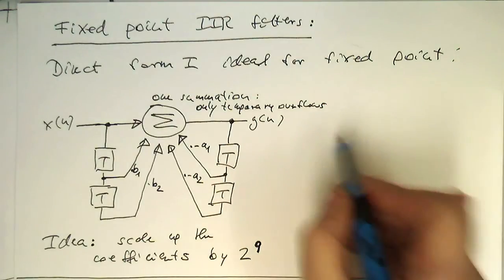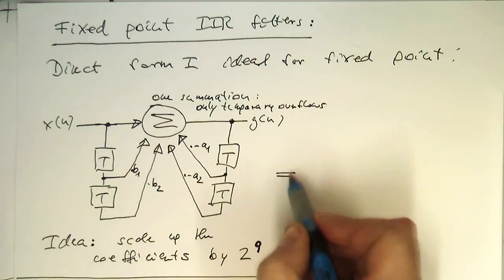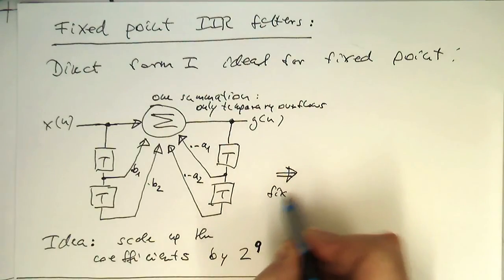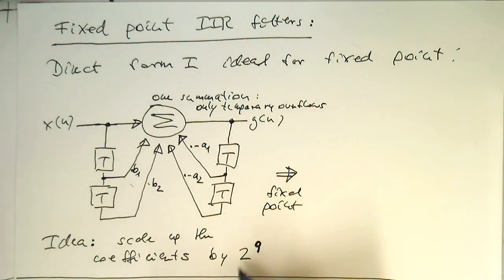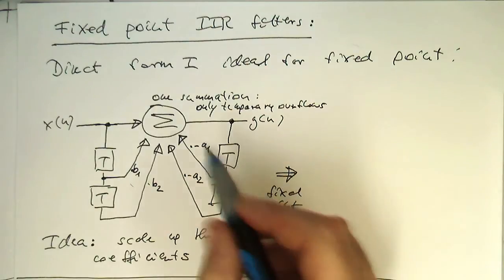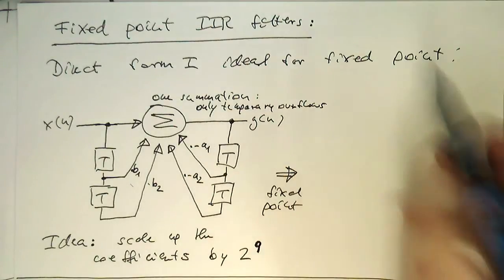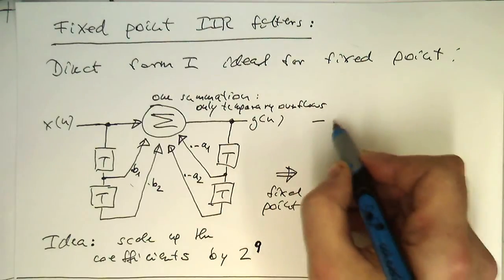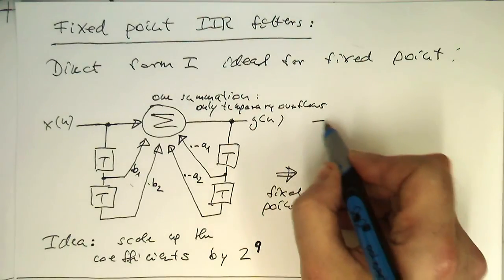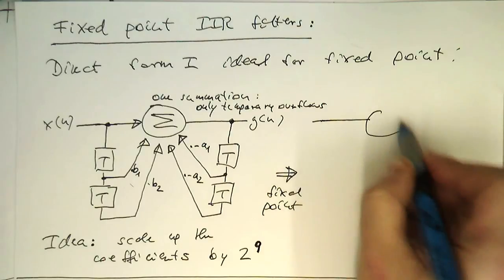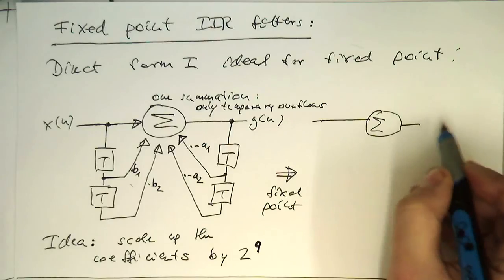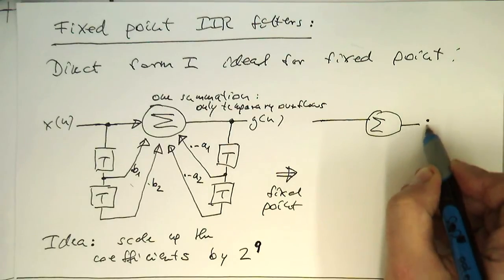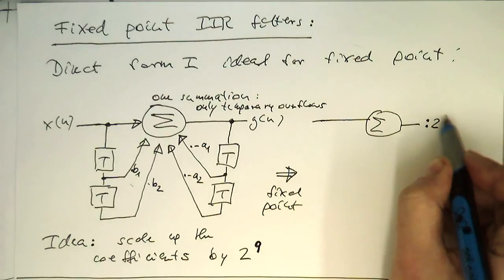So the fixed point implementation, if we now turn this into fixed point, is that we're multiplying all these coefficients by this factor here, and then obviously we need to divide this at the output again. So what we do is we've got again our summation node here. And then here at the output, we have a box here where we just divide by 2 to the 2q.